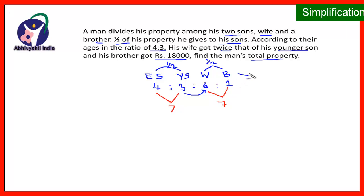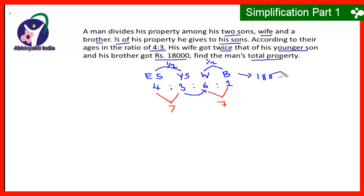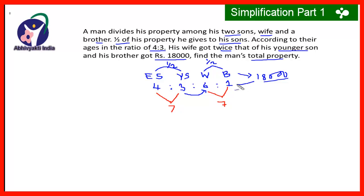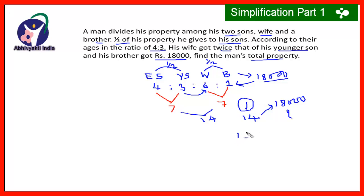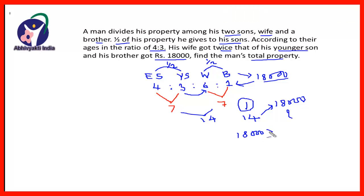The brother's share is Rs.18,000, that is 1 part. Total parts are 14 parts, so 1 part is Rs.18,000. For 14 parts, we multiply: 18,000 multiplied by 14 divided by 1, so this will be equal to Rs.2,52,000. Therefore, the total property of the man is Rs.2,52,000.